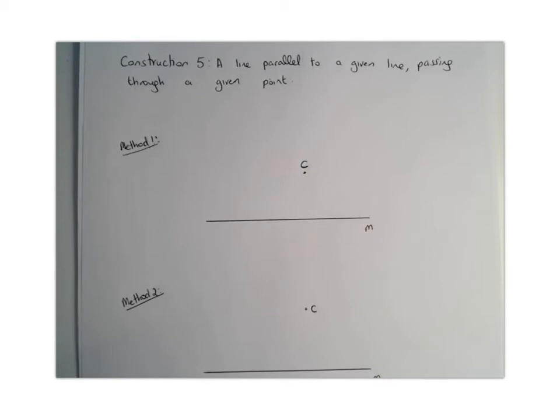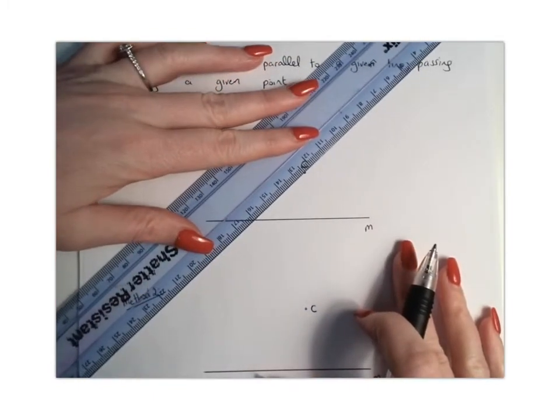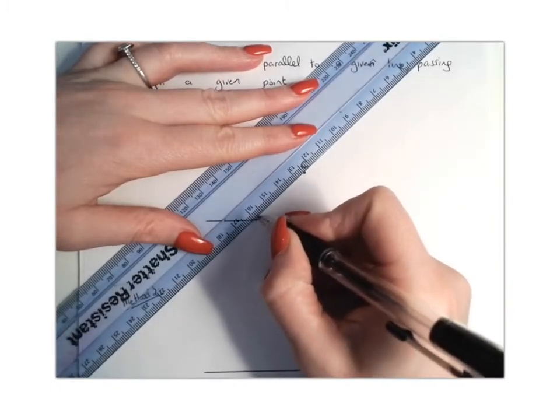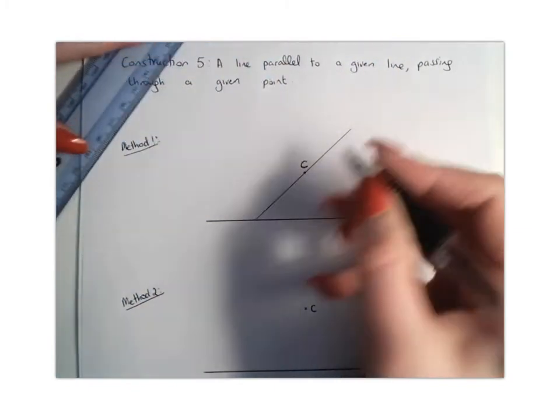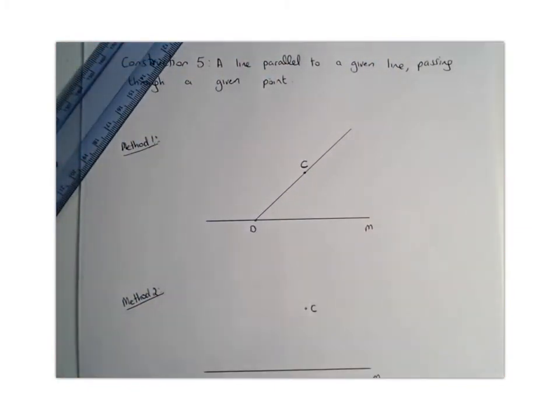So we're going to look at our compass and straight edge method first of all. What we're going to do to begin with is we are going to draw a line through C and the line M. It doesn't really matter exactly where we put that, so I'm going to use my ruler and draw that line. And we're going to label this point, point D. That's step one.